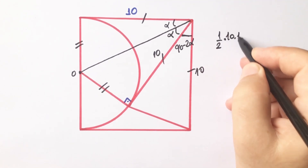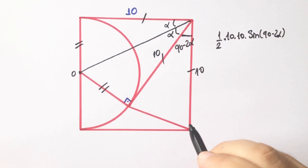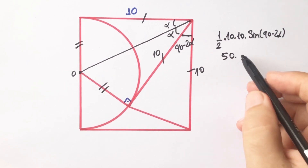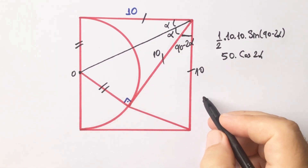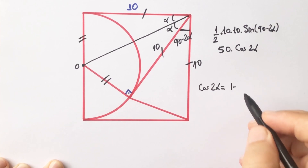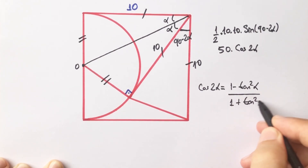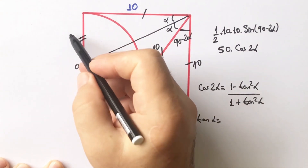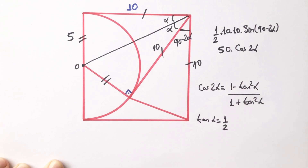Area equals one-half times 10 times 10 times sine(90 minus 2 alpha), which gives 50 times cosine(2 alpha) — since sine(90 minus 2α) equals cosine(2α). We know that cosine(2α) equals (1 minus tan²α) over (1 plus tan²α). Since this side is 5 units, tangent alpha equals 5 over 10, which means tan α equals one-half.